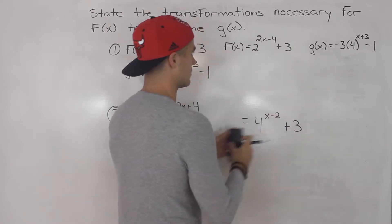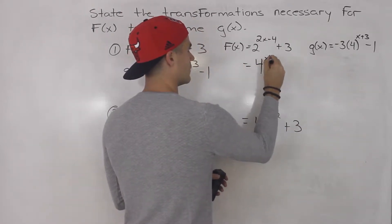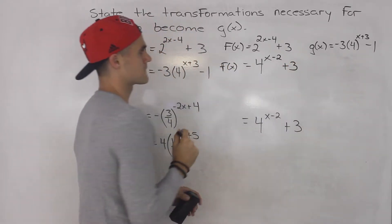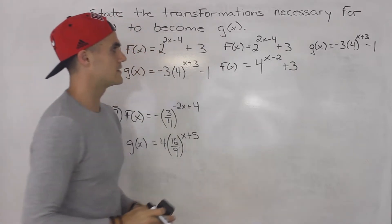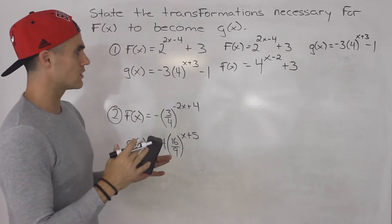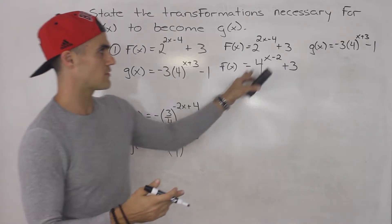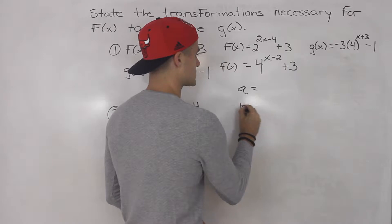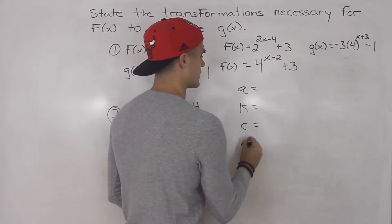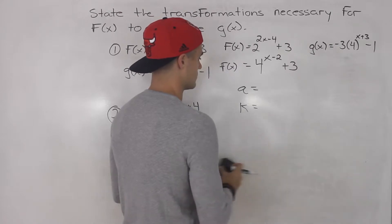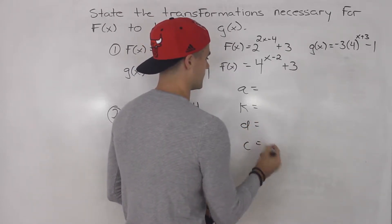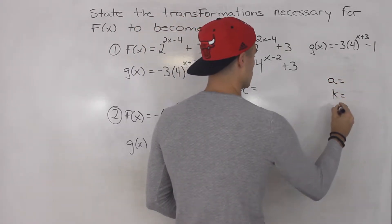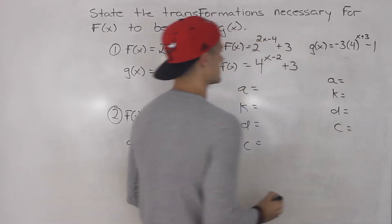I'm going to rewrite it over here — they are the same thing. Now what I do is look at all of the transformation values. Once I have the same base, I look at the transformation values for f: the a value, the k value, the d value, the c value. Same thing for g of x: the a value, the k value, the d value, the c value.